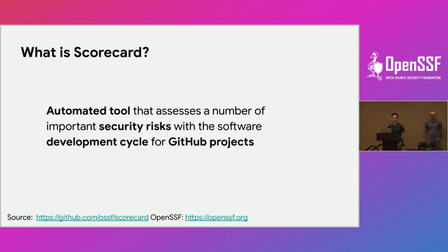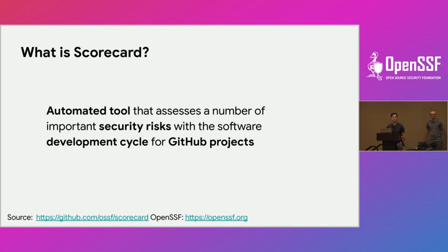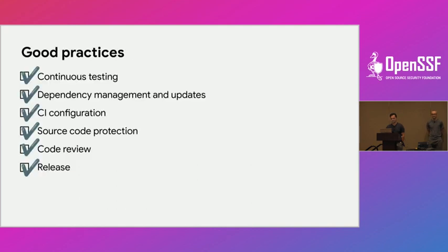Scorecard is an open-source project and an automated tool to help analyze most of the security issues that an open-source project could have. Scorecard is developed within the OpenSSF with cross-industry organizations like GitHub, Google, IBM, and others. There are multiple maintainers — I'm one of them. Scorecard tries to identify good practices as well as bad practices.